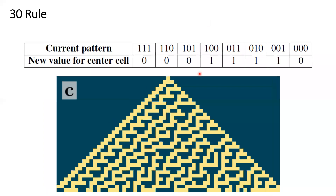Another rule is rule 30. This is more complicated, and it can actually create very unexpected or unpredicted behavior in the long term. These are the rules. This is how to generate this kind of 1D cellular automata. We have rules, and you can come up with your own rule. Try to see if there is something interesting coming up.